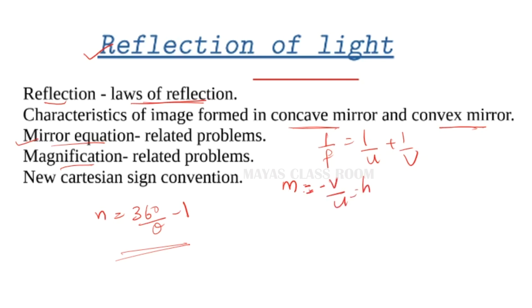Magnification is −v/u, which is also expressed as hi divided by ho. Note the minus sign, which matters when you want to determine the nature of the image.